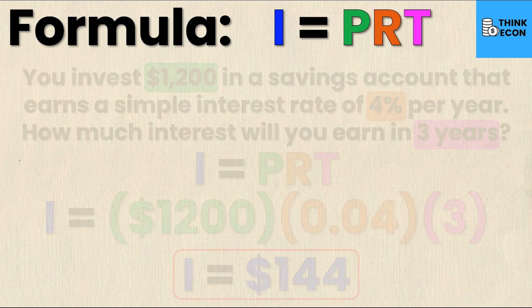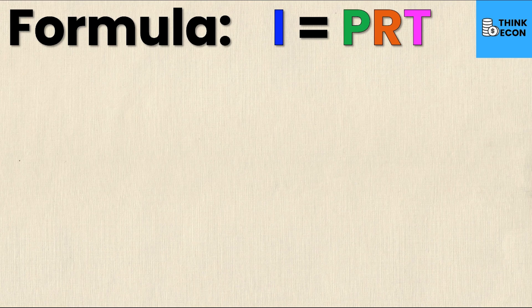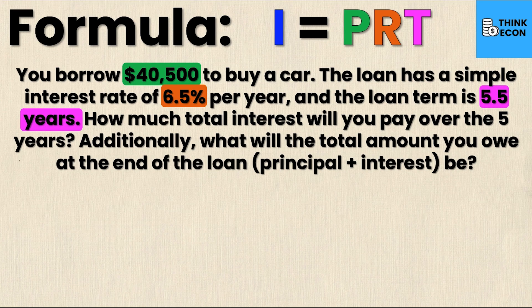Now let's take a look at a slightly harder example, because I think that might help show how applicable this formula can be. Suppose that you borrow $40,500 to buy a car and the loan has a simple interest rate of 6.5% per year, and the loan term is 5.5 years. How much total interest do you pay, and what is the total amount you owe at the end of the loan? Here the principal is $40,500, the interest rate is 6.5%, and the term is 5.5 years.